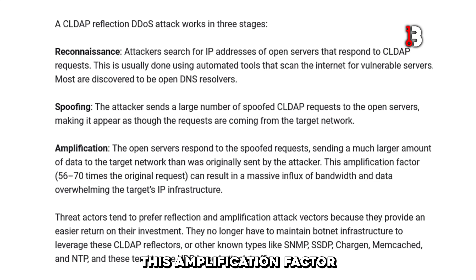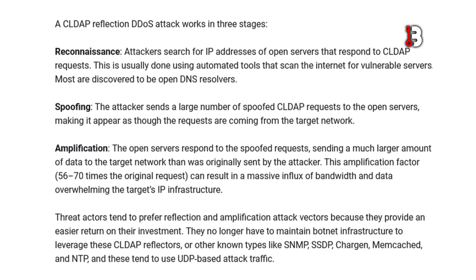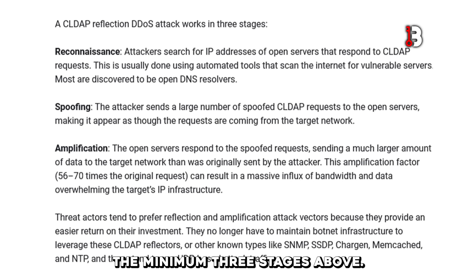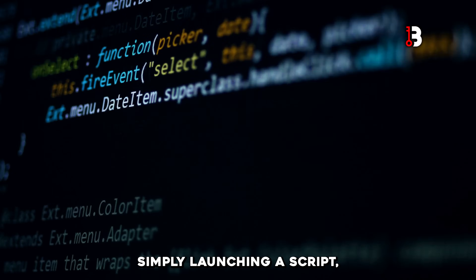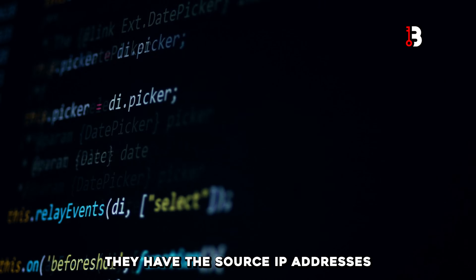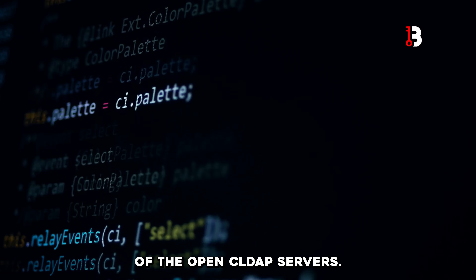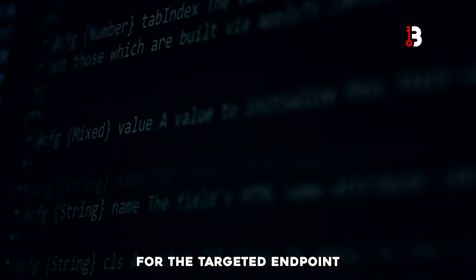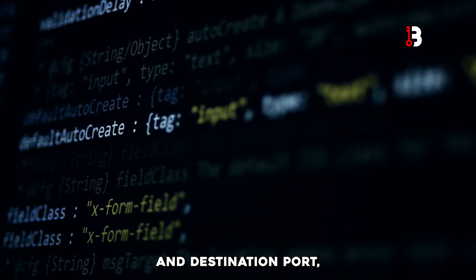This amplification factor — 56 to 100 times the original request — can result in a massive influx of bandwidth and data, overwhelming the target's IP infrastructure. Now that they have performed these three stages, the denial-of-service attacks are easy to orchestrate. Simply launching a script, they have the source IP addresses of the open CLDAP servers, the victim's IP address for the targeted endpoint and destination port, and they can begin their attack campaign.